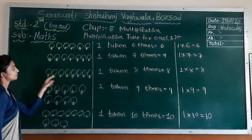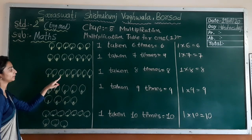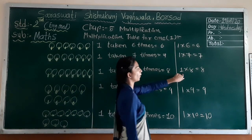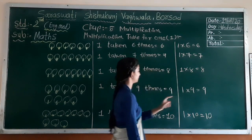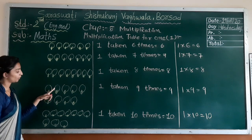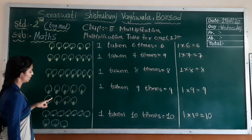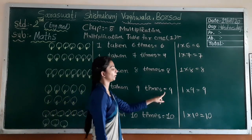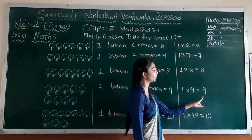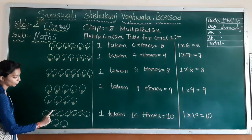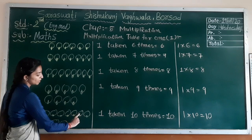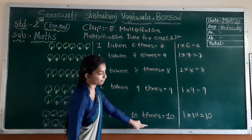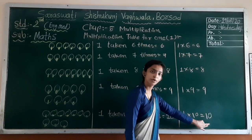Next, counting one through nine times — one multiplied by nine equal to nine. So one multiplied by nine equal to nine. Then counting one through ten times, so one multiplied by ten equal to ten.